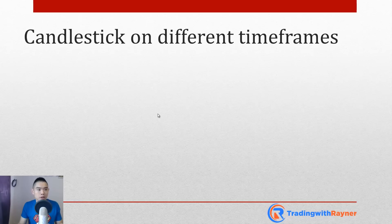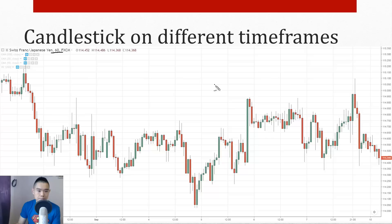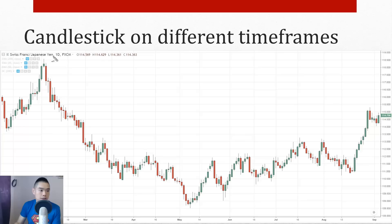Candlesticks appear on different time frames. This is a candlestick chart on the 60-minute (one-hour) time frame — meaning every hour, one bar is painted on the screen. On the daily time frame (1D), every single bar is printed after a full day. So Monday there's one bar, Tuesday one bar, Wednesday one bar, and so on. This is how candlestick patterns form on different time frames.